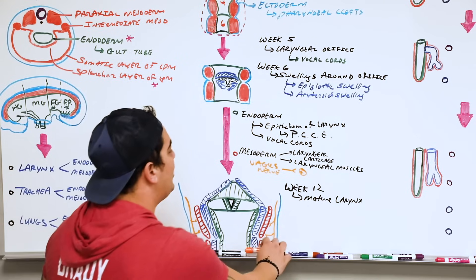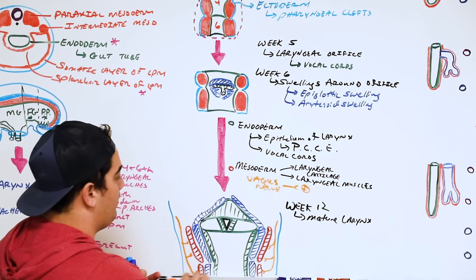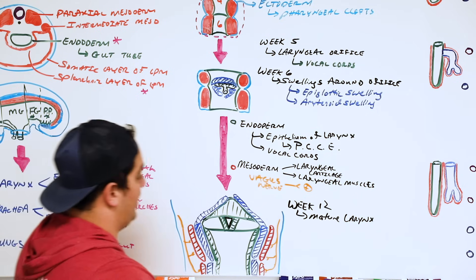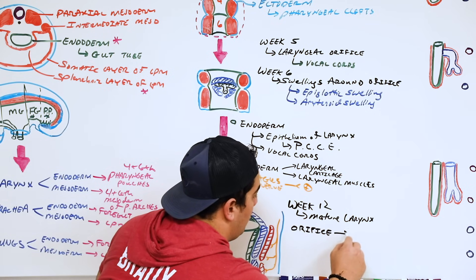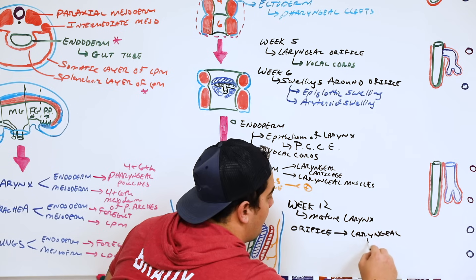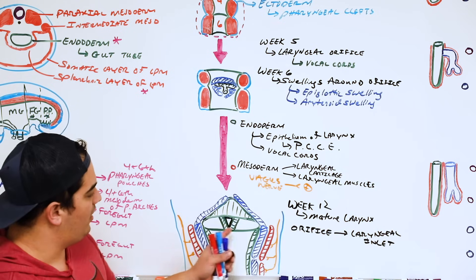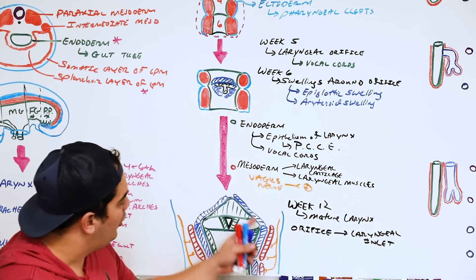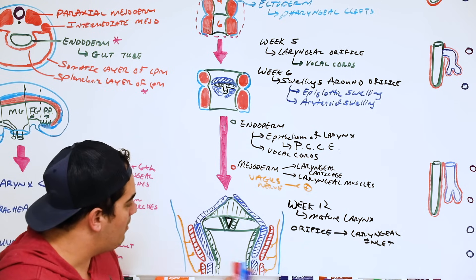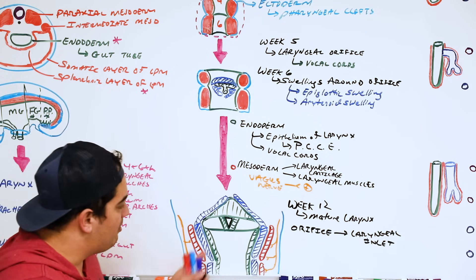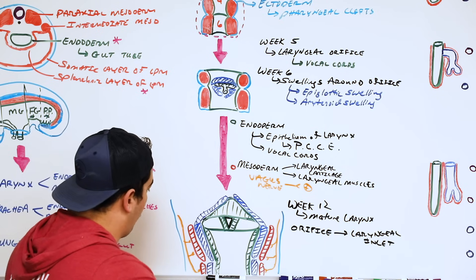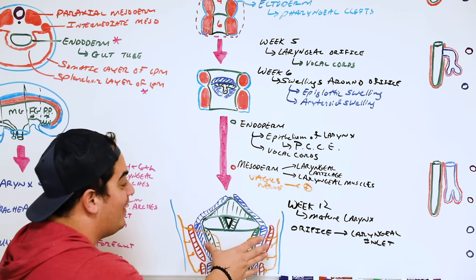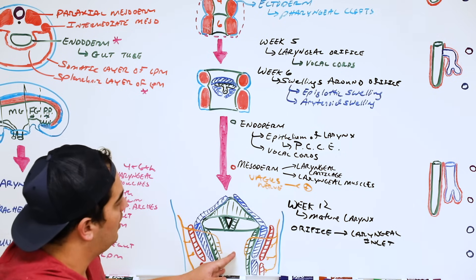At around week 12, we develop our mature larynx. You can see the epithelial lining, the vocal cords, the laryngeal orifice becoming the laryngeal inlet, epiglottic folds, and all the cartilage made from mesoderm, plus muscles like the cricoarytenoids and cricothyroids. The vagus nerve supplies those muscles and also penetrates to give sensory information to the laryngeal epithelium. We now have our mature larynx.